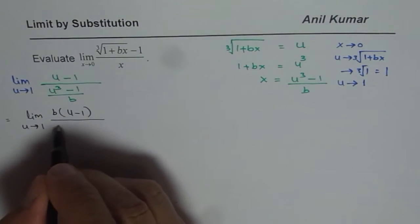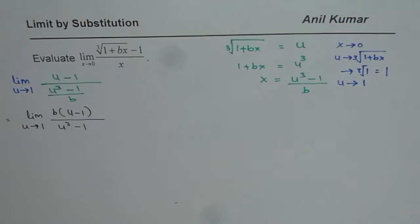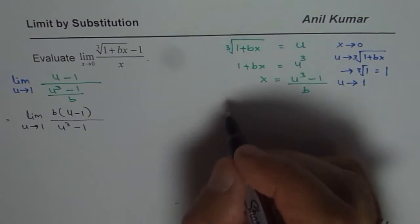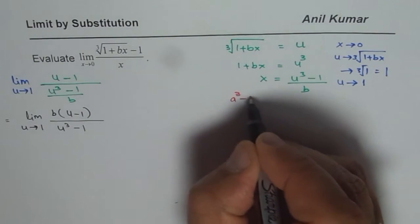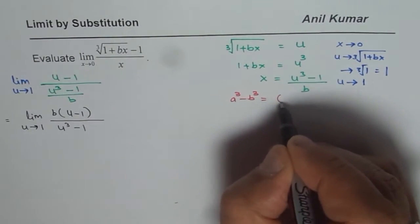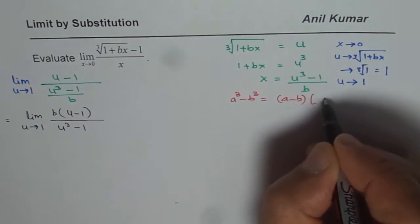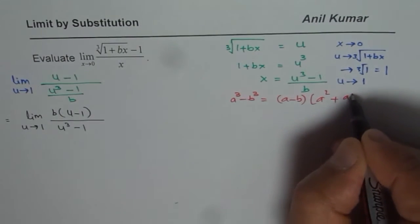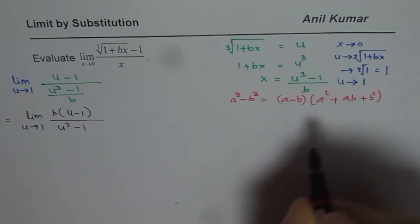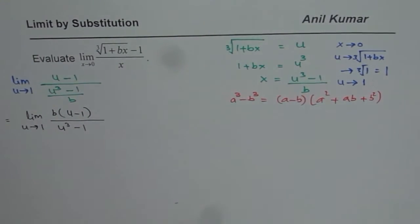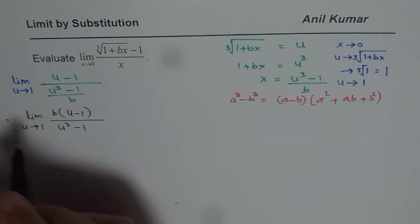u cubed minus 1, let me write first here. Now what is a cubed minus b cubed equal to? As you know, a cubed minus b cubed equals a minus b times a squared plus ab plus b squared. So using that we can expand the denominator. So that is what we are going to do now.